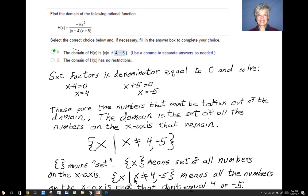And this shows you have the set of all the numbers on the x-axis except, or such that, x does not equal 4 or negative 5. Kind of ran out of room there on the bottom. But that's all this is saying. And that's how you find the domain of a rational function. And here we're writing in something called set builder notation. There's another way to write it, but it's not the way your book writes it, so we're not going to talk about that right now. Talk to you later. Bye-bye.